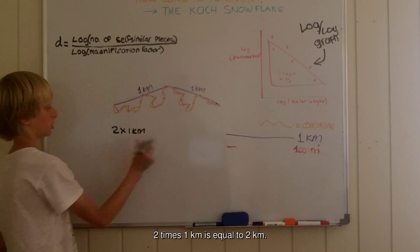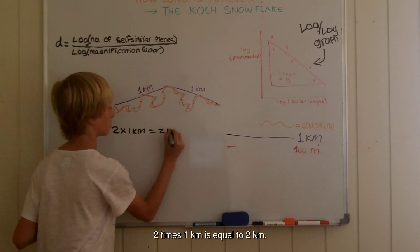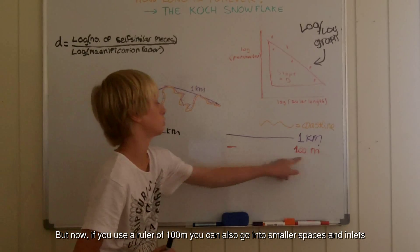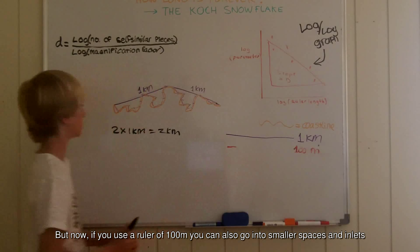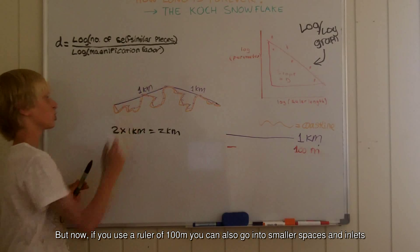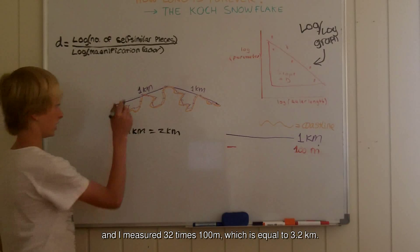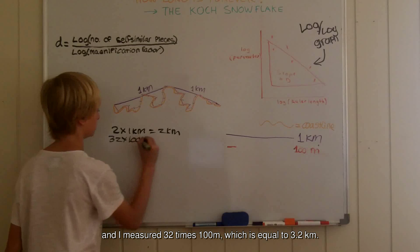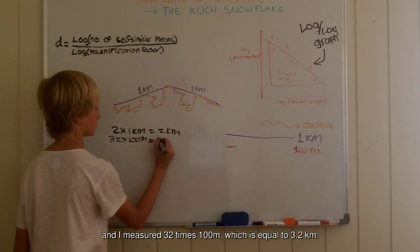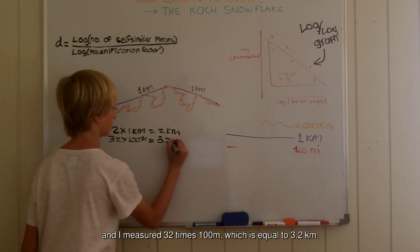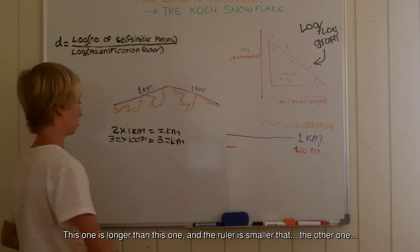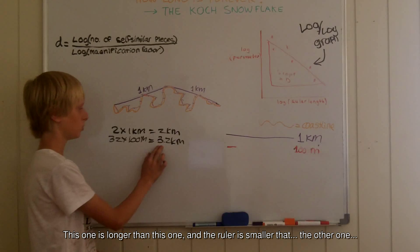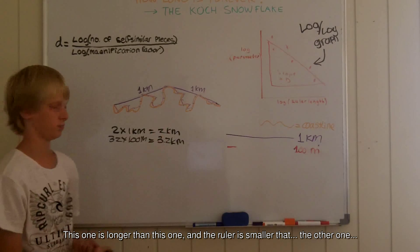2 times 1 km is equal to 2 km. But now, if you use a ruler of 100 meters, you can also go into smaller spaces and inlets. I measured 32 times 100 meters, which is equal to 3.2 km. So this measurement is bigger than the previous one, and the ruler is smaller than the other one.